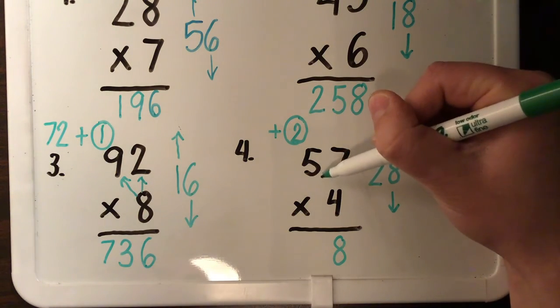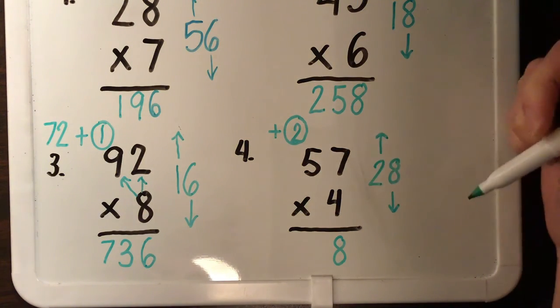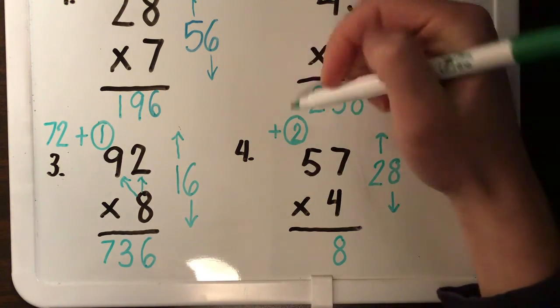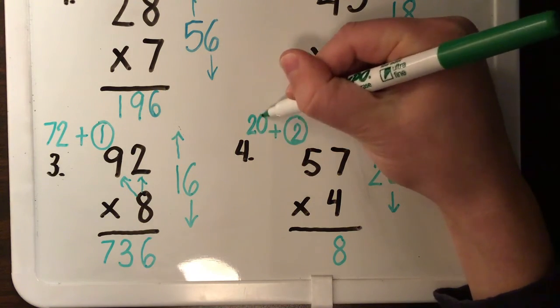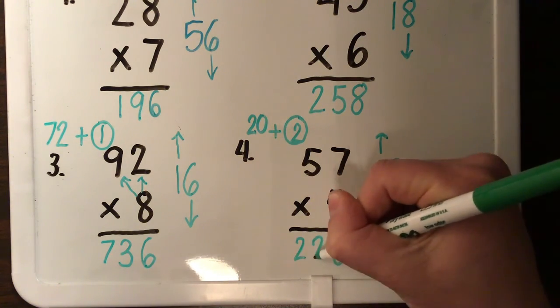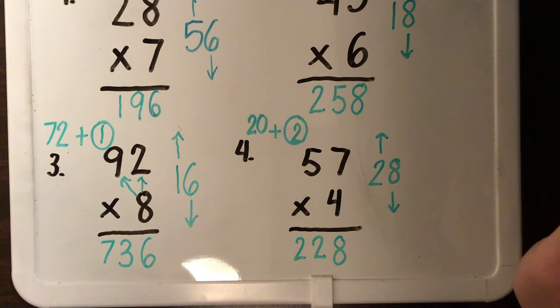Now I do five times four. Five times four. Four, eight, 12, 16, 20. 20 plus two is 22. My answer is 228.